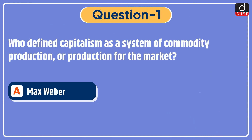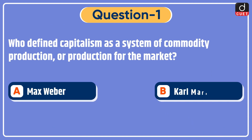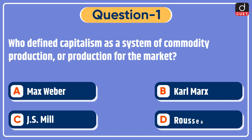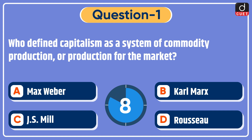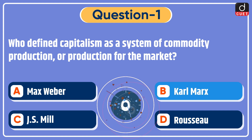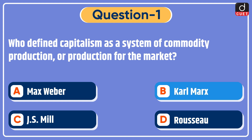Now let's begin today's session. First question: who defined capitalism as a system of commodity production, or production for the market? Options: Max Weber, Karl Marx, J.S. Mill, or Rossio? The correct answer is option B — Karl Marx.